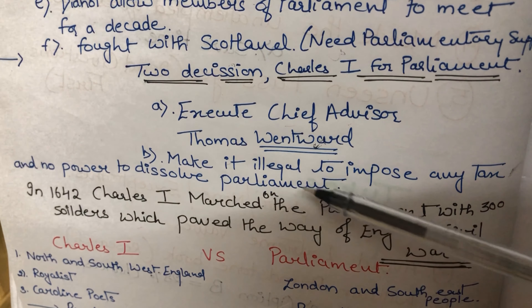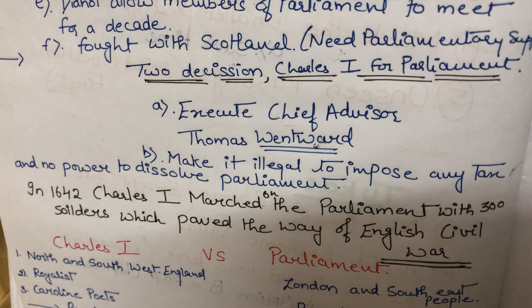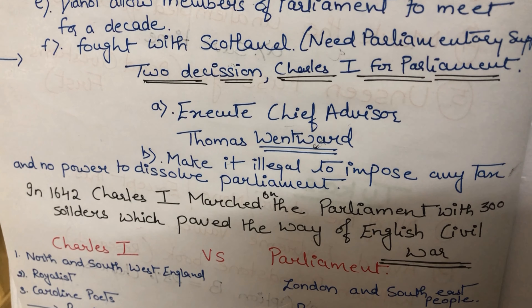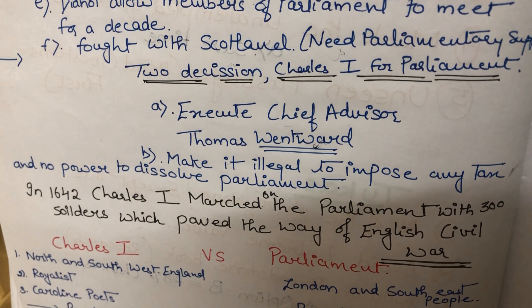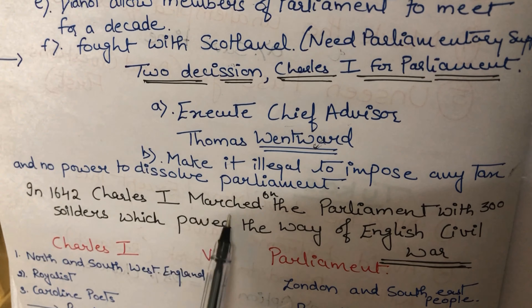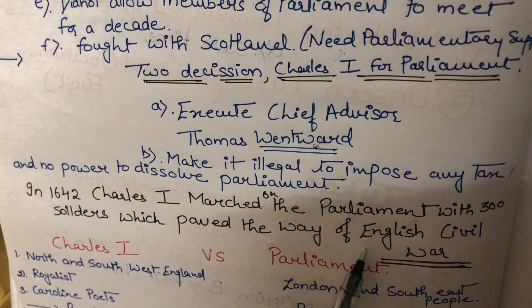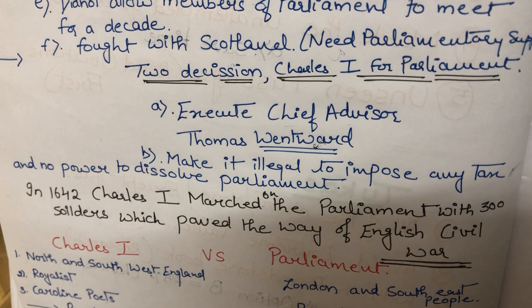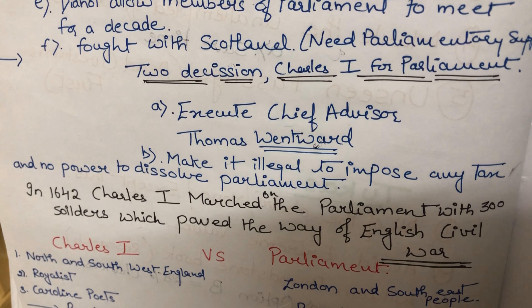Charles I was confused about how parliament could keep such rules in front of him, so he took another wrong step. In 1642, Charles I marched on the parliament with 300 soldiers, which paved the way for civil war. People thought that if parliament was not safe, then common people would not be safe either. That is why the English Civil War started.